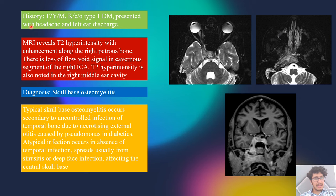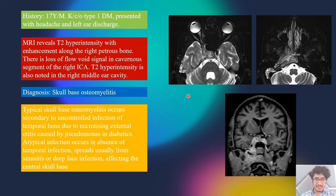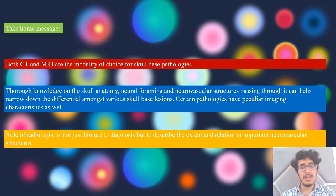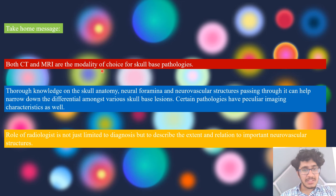A 70-year-old man with type 1 diabetes presented with headache and left ear discharge. MRI showed T1 hyperintensity along the petrous bone, loss of flow void signal along the right internal carotid artery, and T2 hyperintensity in the middle ear cavity. This was skull base osteomyelitis, an atypical infection arising from the temporal bone rather than sinusitis or deep facial infection, which is typical and usually involves the central skull base.